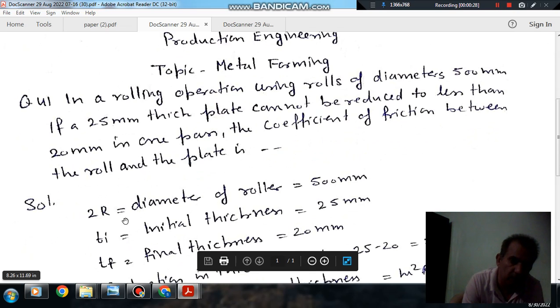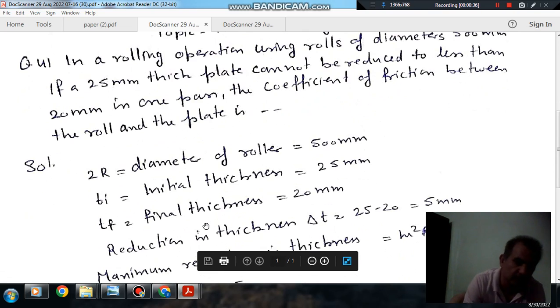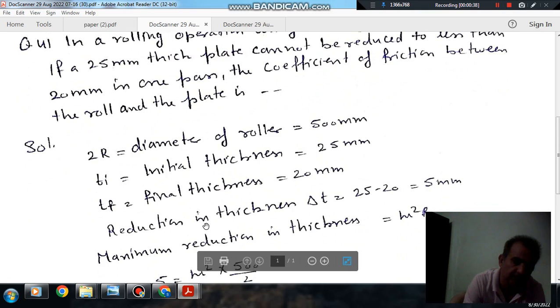The diameter of the roll, 2R, is given as 500 mm. Initial thickness is 25 mm, and final thickness is 20 mm. Reduction in thickness is 5 mm.